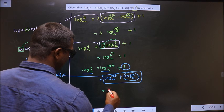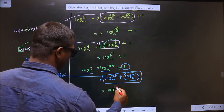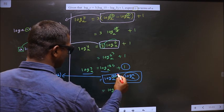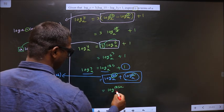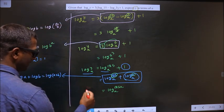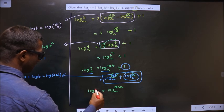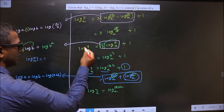So now this will change to log, in place of a it is 125, in place of b it is a. So 125a base a. And here log y base a, no change.